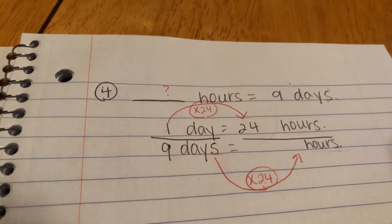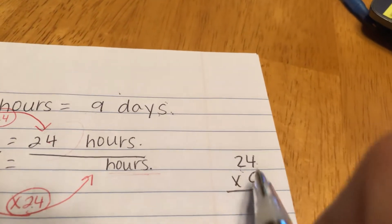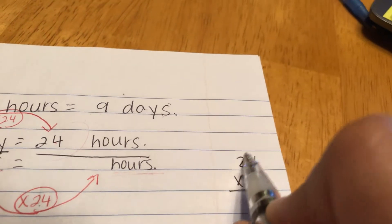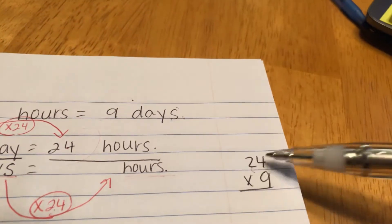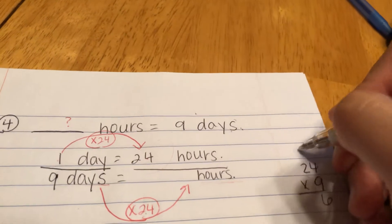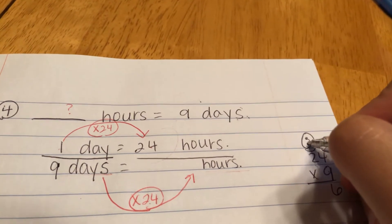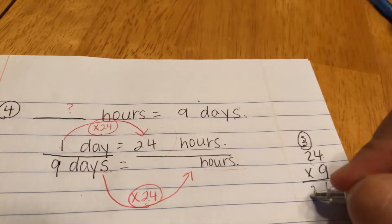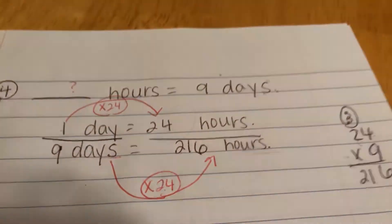I don't know 24 times nine off the top of my head, so I'll work it out. I put the two-digit number on top: 24 times nine. Nine times four is 36 — six on the bottom, carry three. Nine times two is 18, plus three is 21. So that tells me that in nine days there are 216 hours.